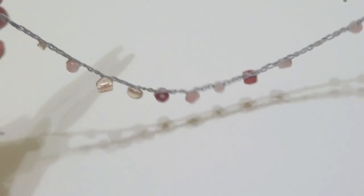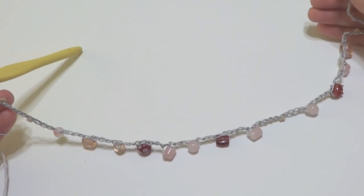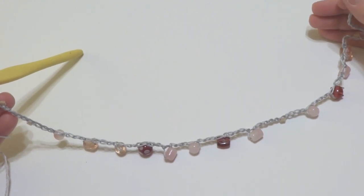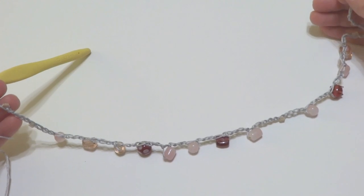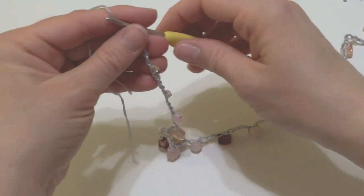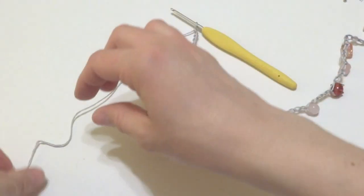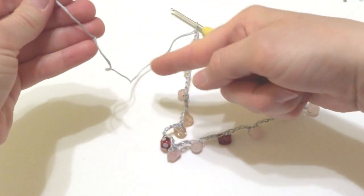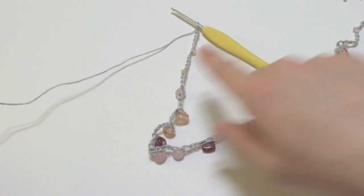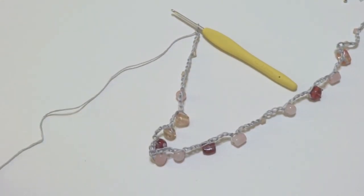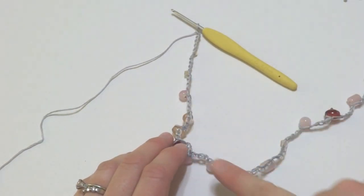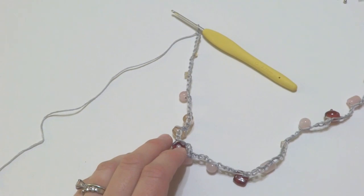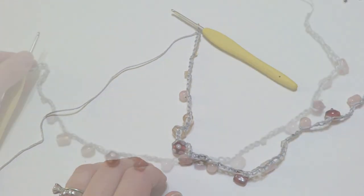So then you can kind of hold it up. And I would recommend putting this around your neck as you go along to just kind of see if it's the length you want it to be. If it's still too short, simply set your hook down, grab your needle, thread some more beads on there. Keep working some chains until you're out of the thread. So to finish the necklace, we're just going to keep making more and more strands.